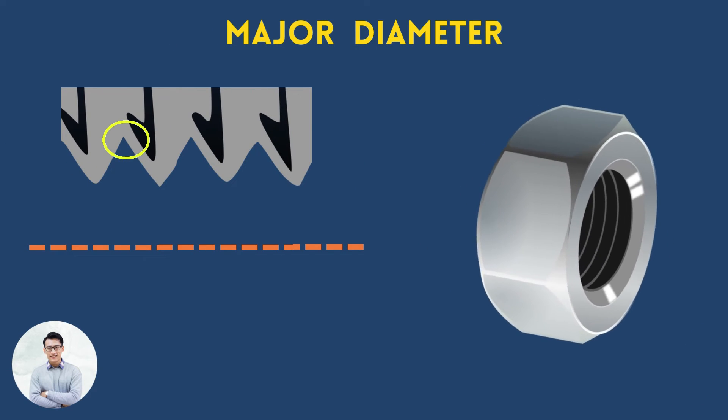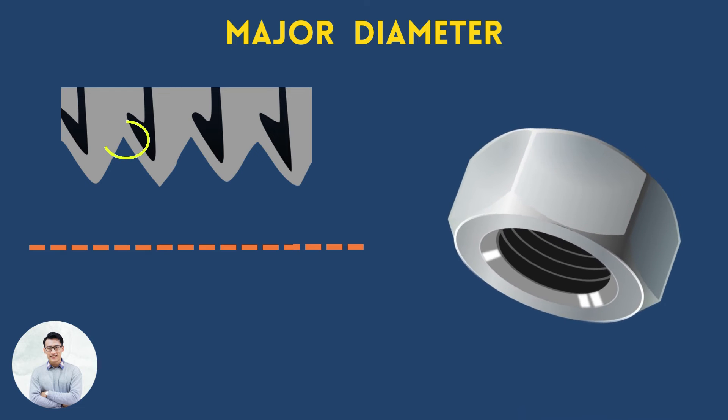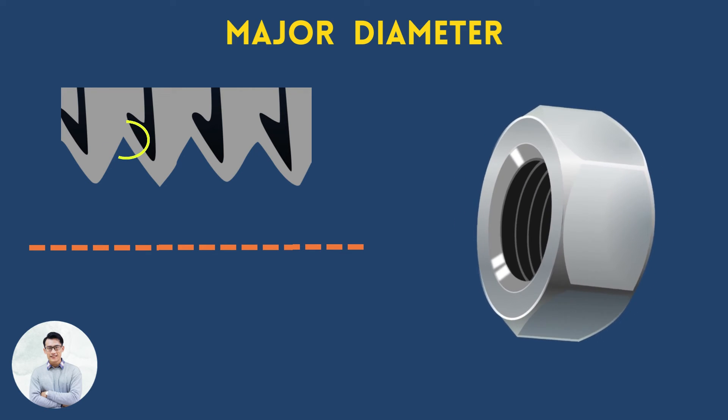In internal threads, the major diameter is measured on the root. It is not a critical dimension and must only be larger than the nominal thread diameter.